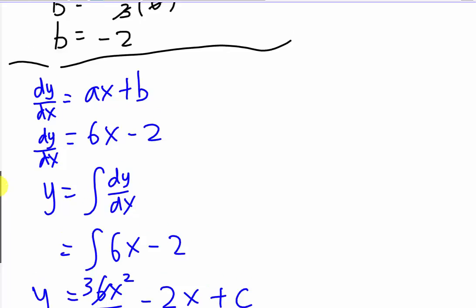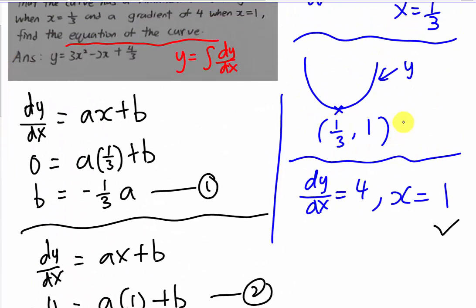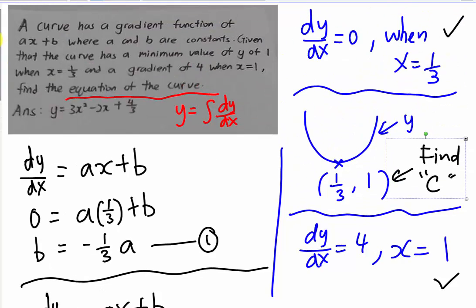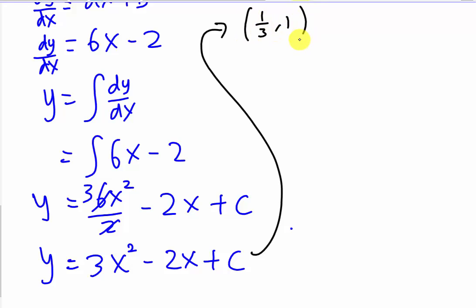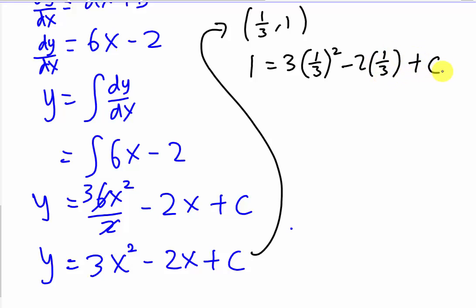The coordinate (1/3, 1) is important because we use it to find c. Substituting x equals 1/3 and y equals 1: 1 equals 3(1/3)squared minus 2(1/3) plus c, which gives 1 equals 1/3 minus 2/3 plus c, so 1 equals negative 1/3 plus c, meaning c equals 4/3.